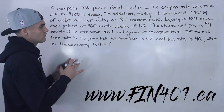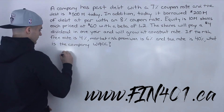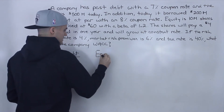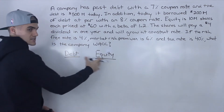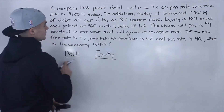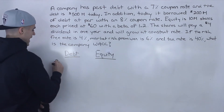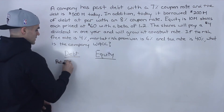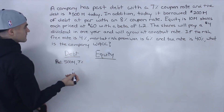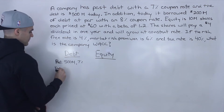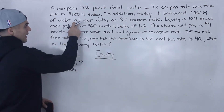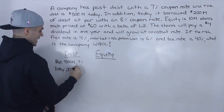So lots going on in this question. Whenever I get a question like this, what I like to do is split up all of the information in list form, depending on the debt and equity. Sometimes there's information about preferred shares as well, but there's no preferred equity in this question. So what's going on with the debt? There is past debt that was issued, worth $500 million today with a 7% coupon rate. And then today the company borrowed $200 million worth of more debt at par with an 8% coupon rate.